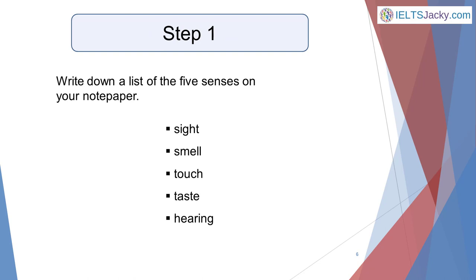First, read the topic sentence — in this case, a food you used to dislike but now enjoy — and the suggestions in the bullet points for what you could talk about. Then write down a list of the five senses on your notepaper. Here they are to remind you: sight, smell, touch, taste, and hearing. With this method I don't recommend using these words as headings as we did with the question prompt words in strategy one. You'll find that your ideas don't fit neatly under each of the headings — just use the words as prompts.